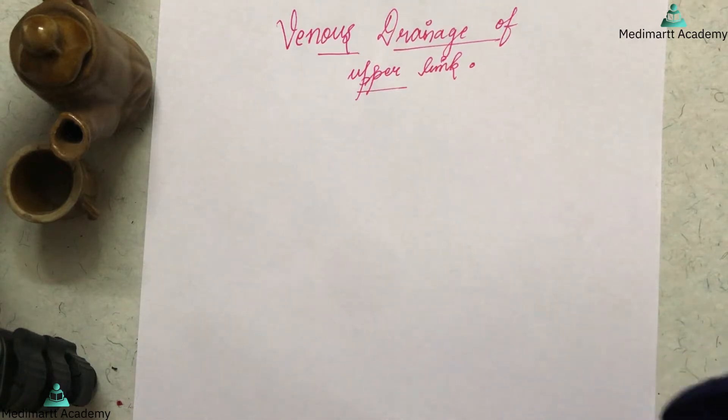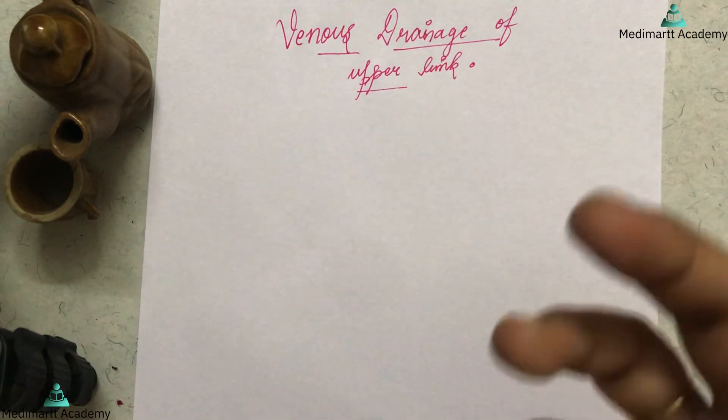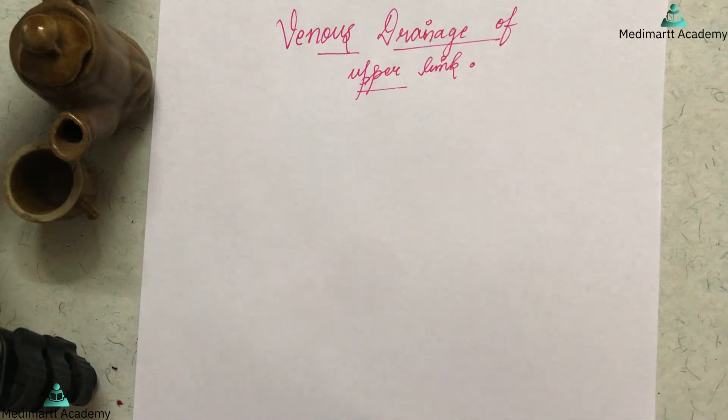First of all, some peculiar things that you have to keep in mind: in the venous drainage of the upper limb, you have to draw the dorsal venous arch. This venous drainage starts from the dorsal venous arch.